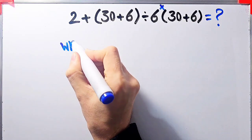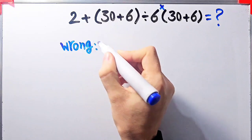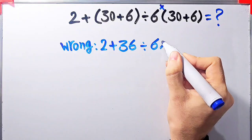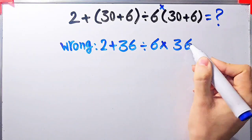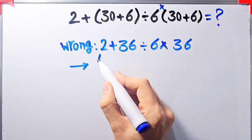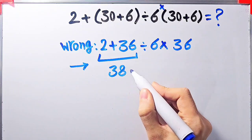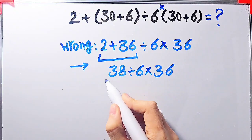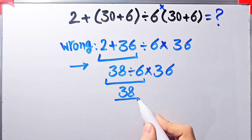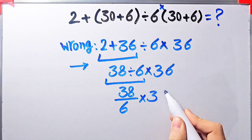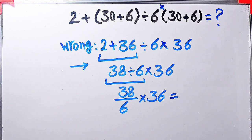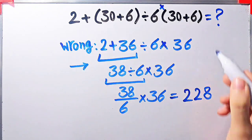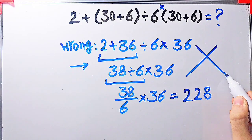Some people solve this question like this: they say 2 plus 30 plus 6 equals 36, then divided by 6, then times 30 plus 6 which equals 36. Starting from the left: 2 plus 36 equals 38, then 38 divided by 6 equals 38 over 6, then 38 over 6 times 36 equals 228. They say the final answer equals 228, but this answer is definitely wrong.